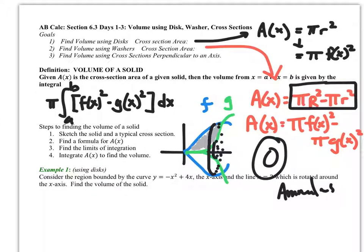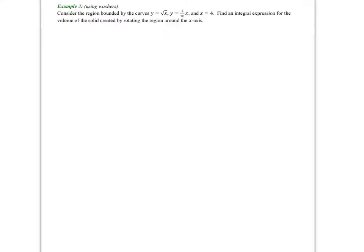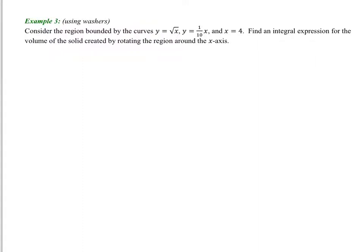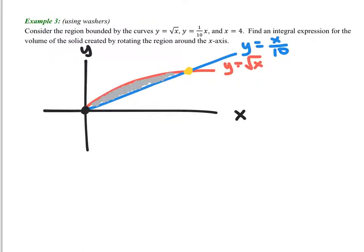So let's do a washer method example. Okay, let's sketch these out. So here I have a graph of my two functions, y equals square root of x, and y equals x over 10. And it looks like I want to cut that off at x equals 4. So let's see here, x equals 4. So first let's find out where these two graphs would meet. So the square root of x equals x over 10, just to be sure of where we're at here.